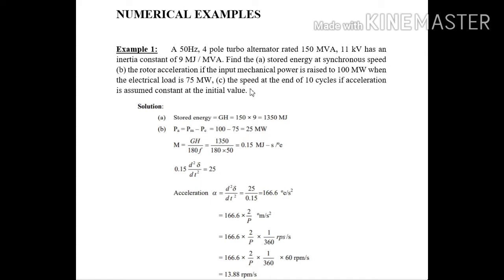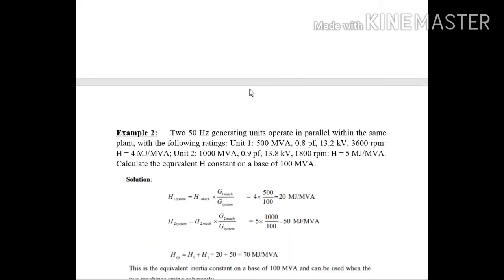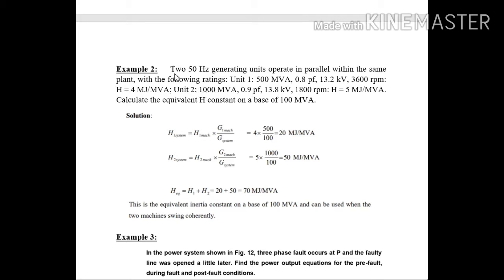This problem we had taken for the very first online lecture. Let us see for this second one. You can read this problem. 250 hertz generating units operate in parallel within the same plant with the following ratings are given. The multi-machine system problem, this is given. It is required to calculate equivalent inertia constant on the base of 100 MVA.